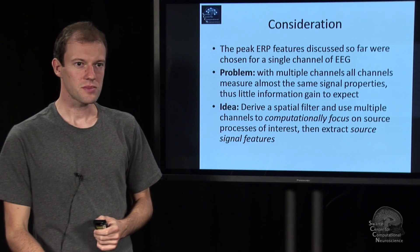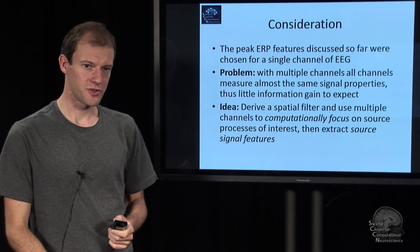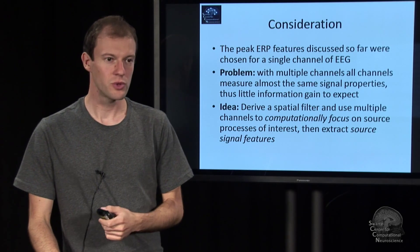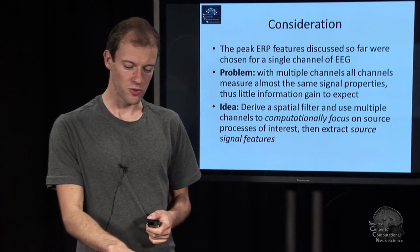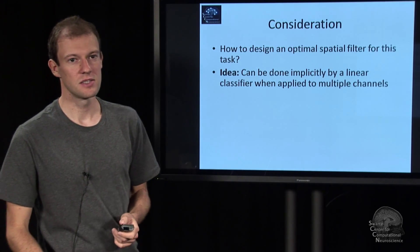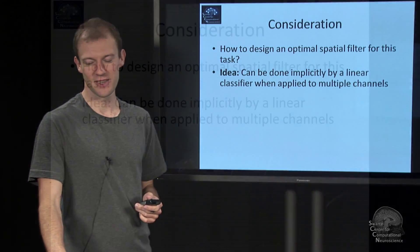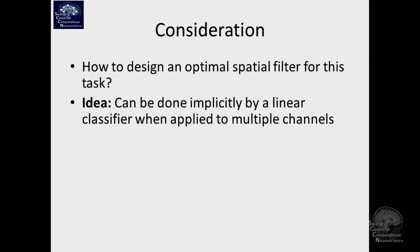So we want to design spatial filters, and basically we want to compute them. And so we need a rule to compute them. And it turns out that it's kind of funny. A spatial filter is a linear mapping from multiple channels onto the output.